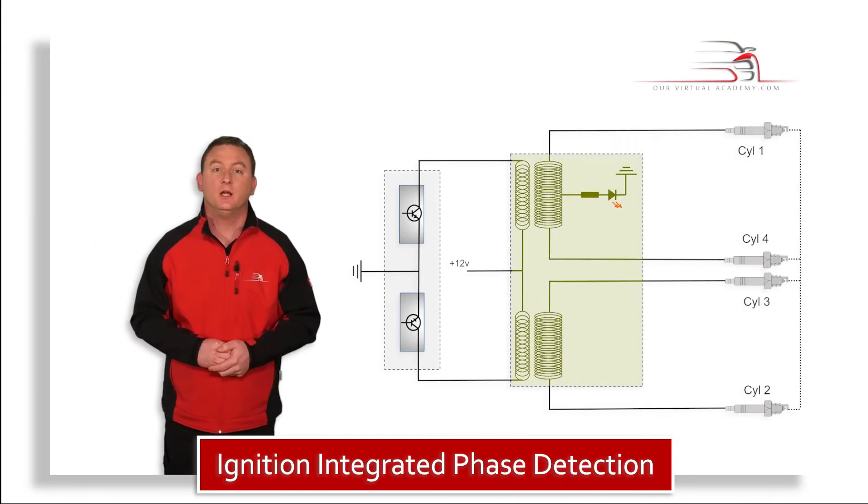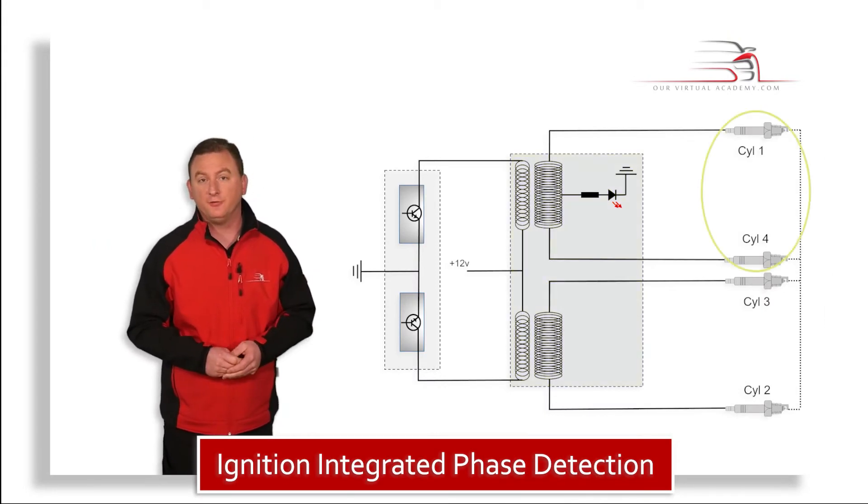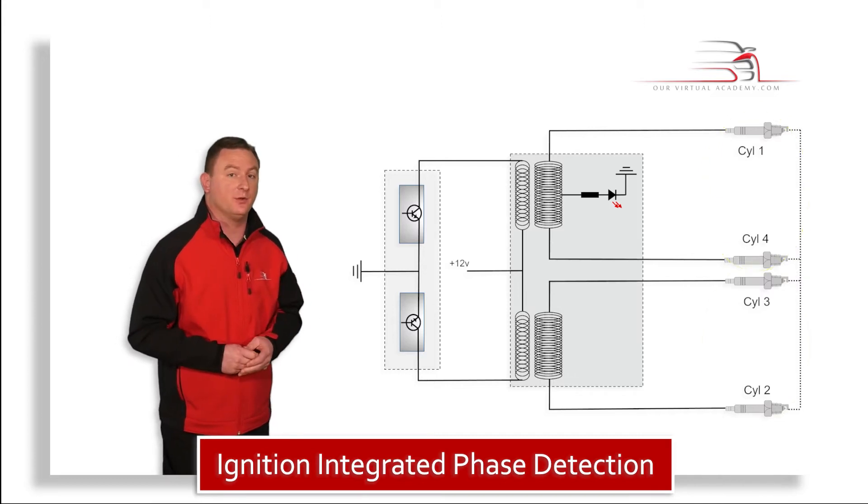Inside the coil pack, we have two double-ended coil systems, one for cylinders one and four and the other for cylinders two and three.